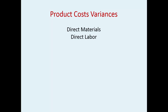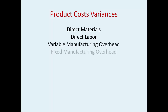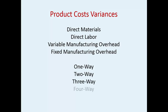There can be product cost variances with direct material, direct labor, variable manufacturing overhead rate, and fixed manufacturing overhead as well. You can have a one-way, a two-way, a three-way, or four-way variance analysis.